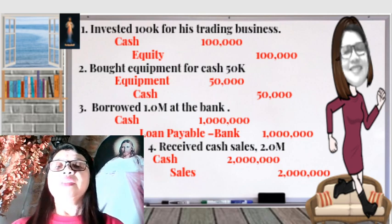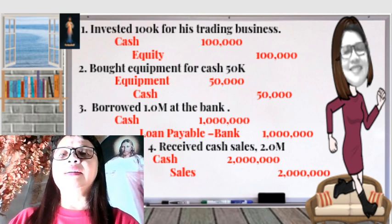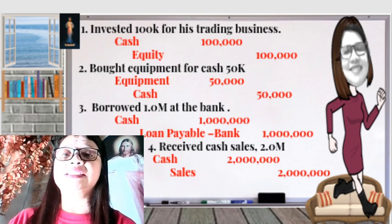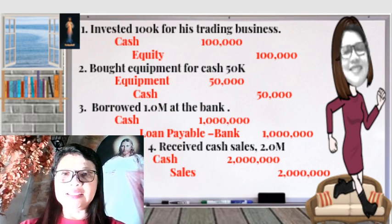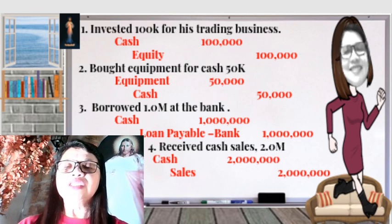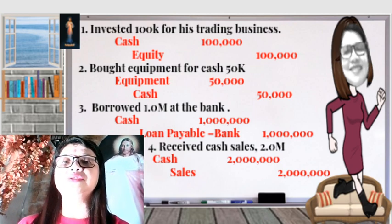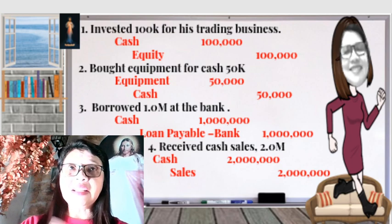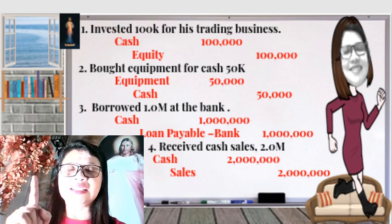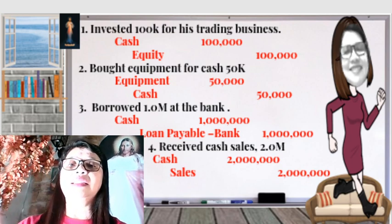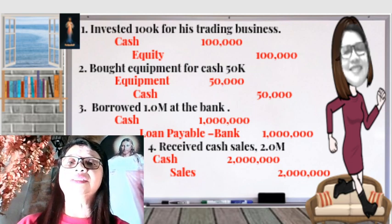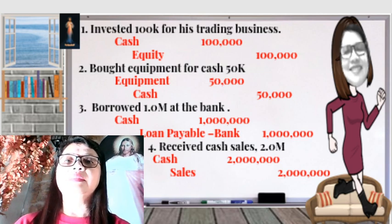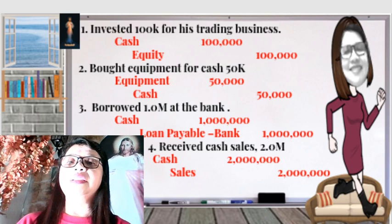When the owner invested $100,000, the business received cash, so you debit cash $100,000 — there is an increase in the asset account, which has a debit normal balance. The equity is a credit normal balance, so you credit your equity $100,000.